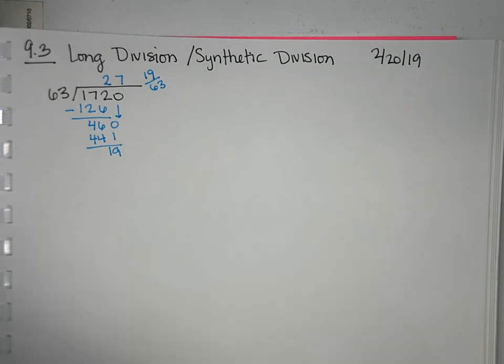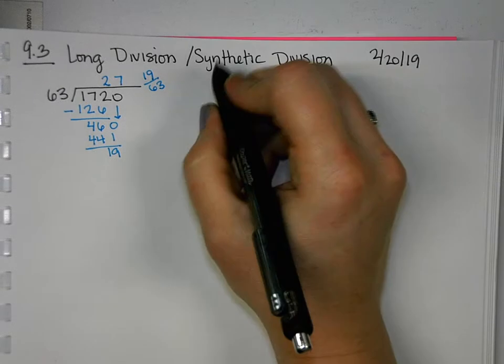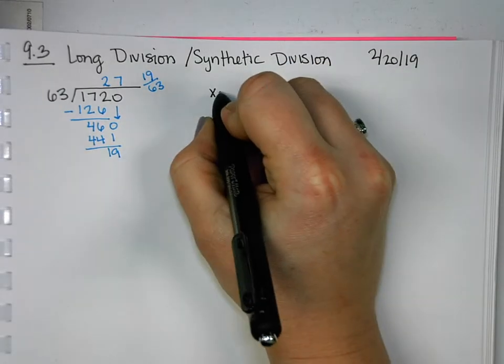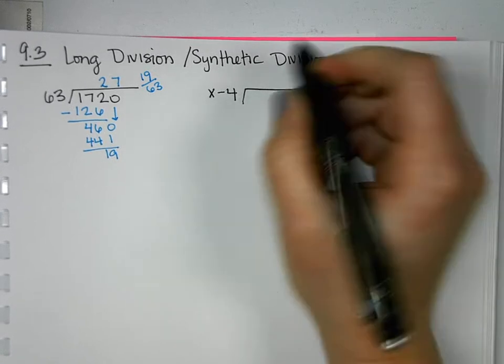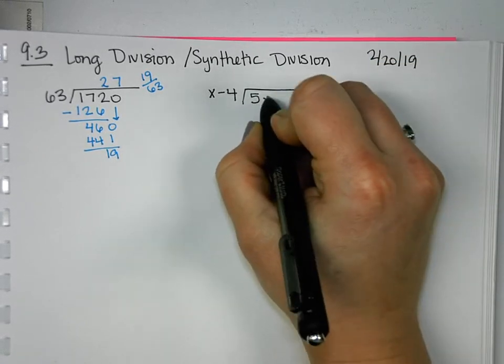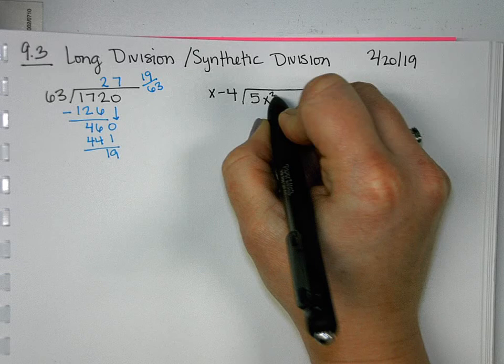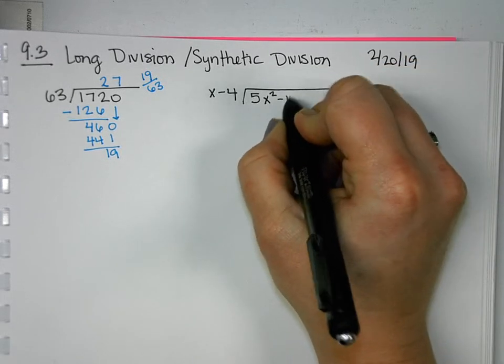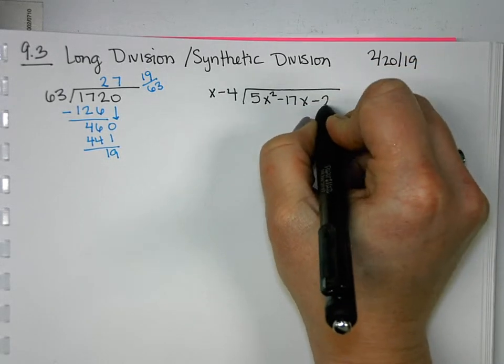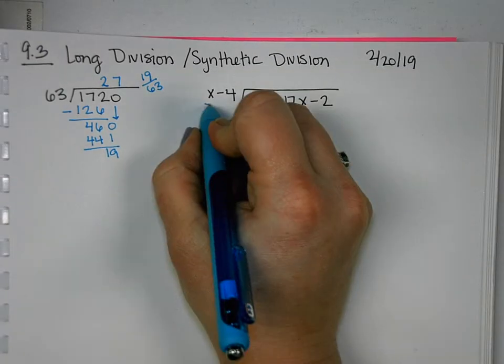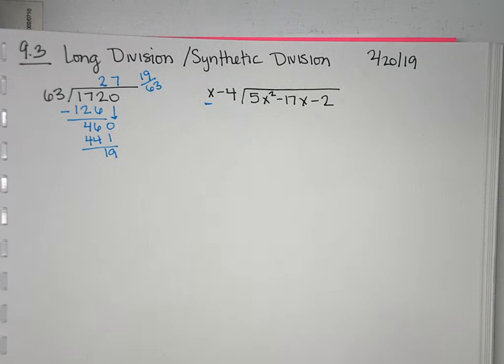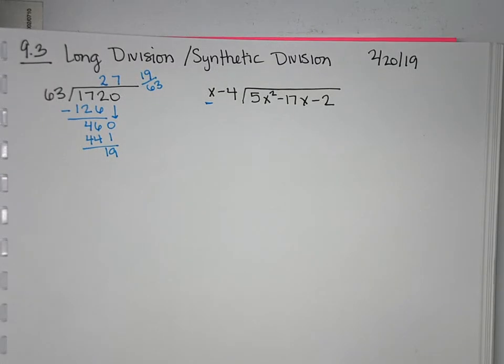So that was when it was just numbers. When we do it with polynomials, we go through the same questions in our process. We just have to consider that there's letters involved. Okay.